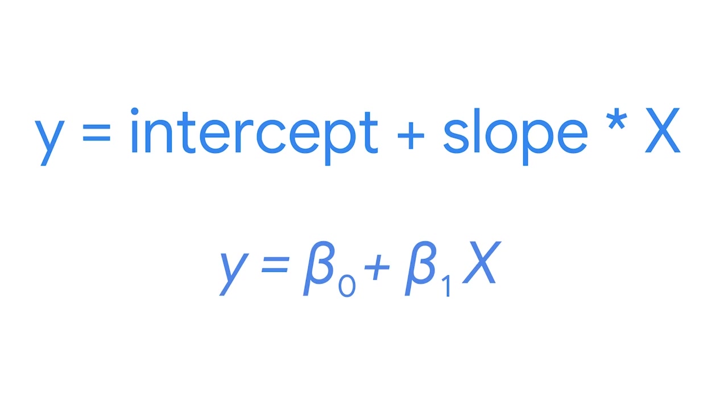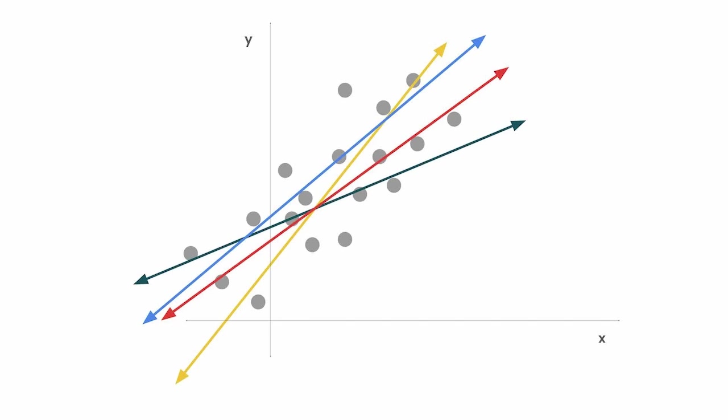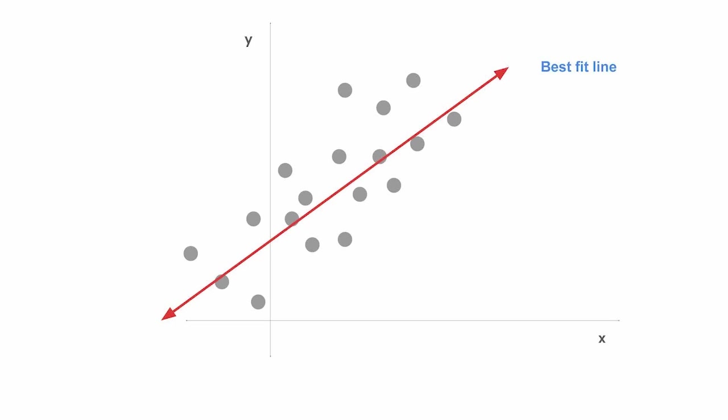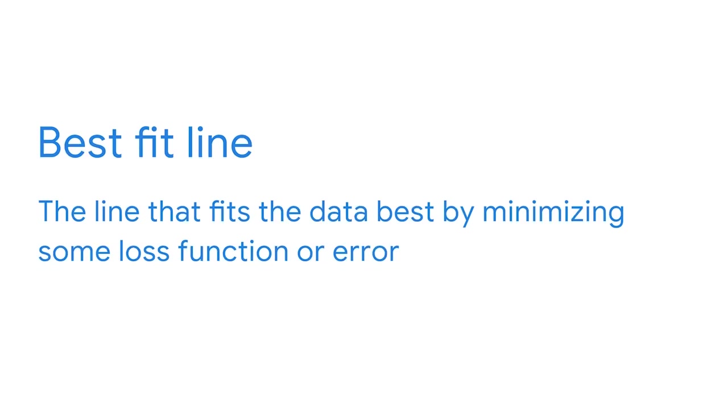In prior videos, we've mentioned simple linear regression, which is a regression technique that estimates the linear relationship between one independent variable X and one continuous dependent variable Y. Recall that the linear in linear regression indicates what the data looks like when plotted on an X-Y coordinate plane — a line. In simple linear regression, we're only interested in two variables, one X and one Y variable. So the equation for a regression line is Y equals intercept plus slope times X, represented as beta 0 plus beta 1 times X.